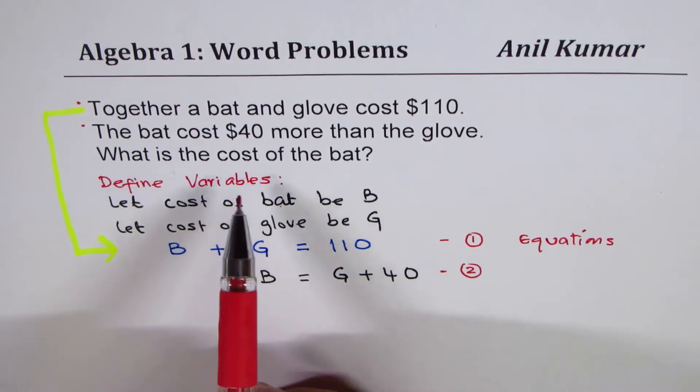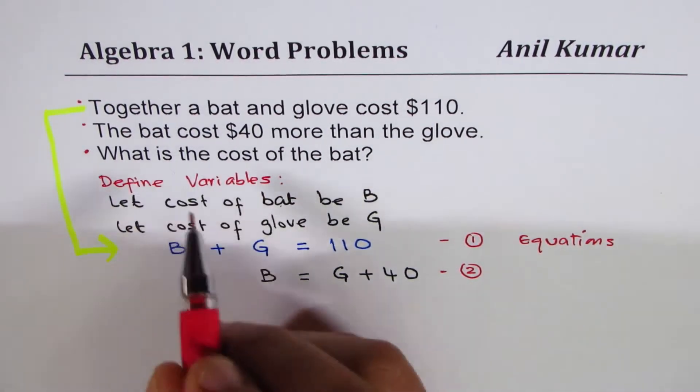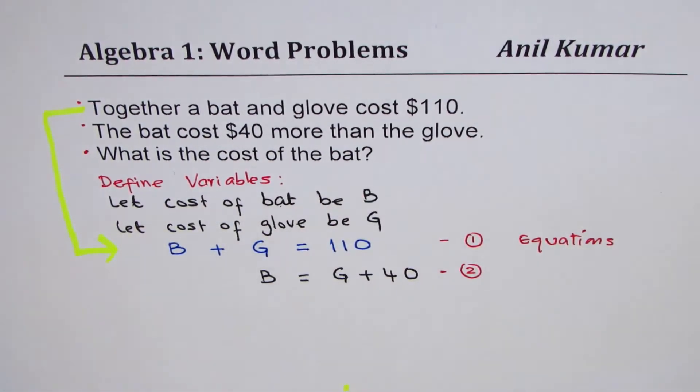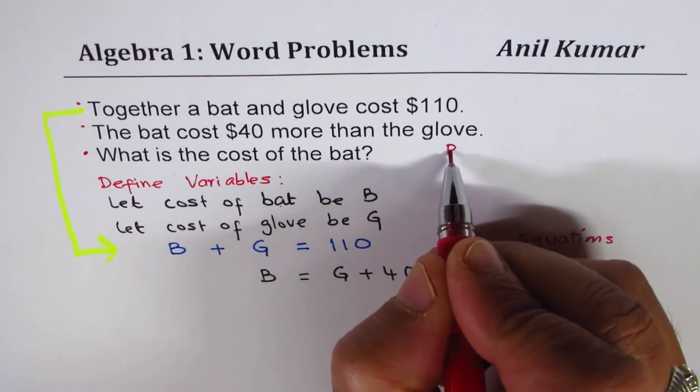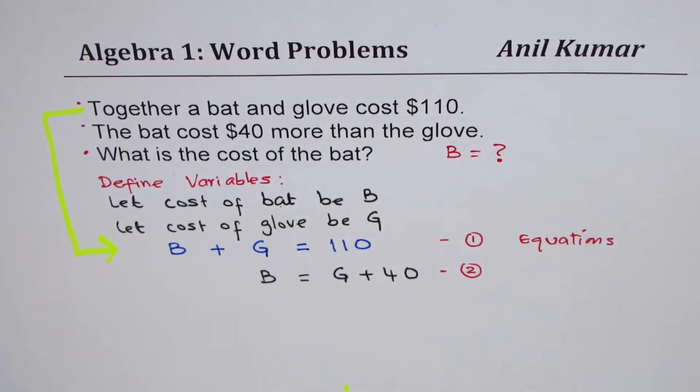The last statement here is what is the cost of the bat? Now, that kind of a statement is asking for answers. What is the cost of the bat? So, we need to find what is the value of B. This is what we need to find.